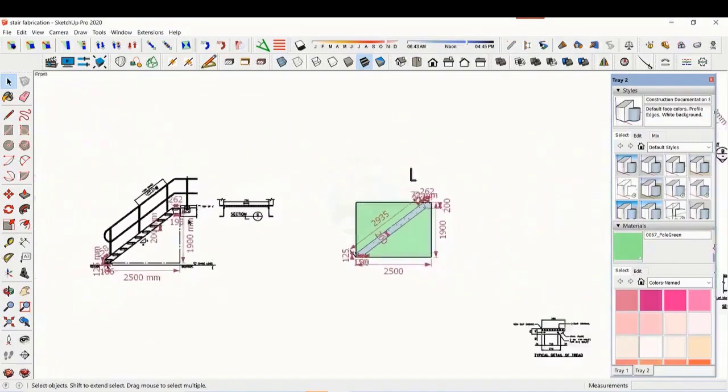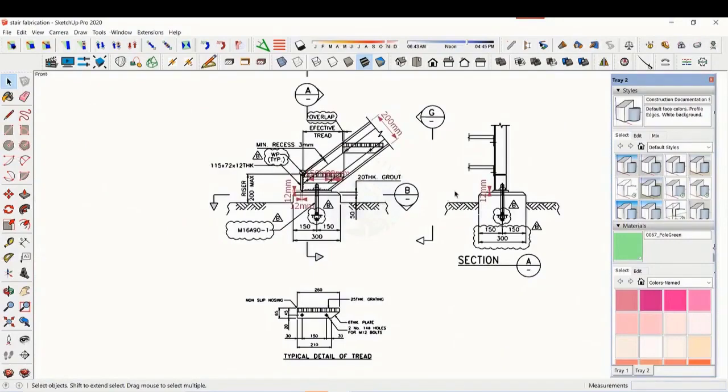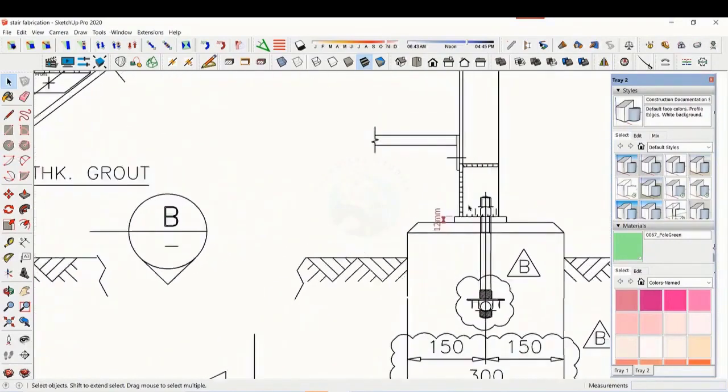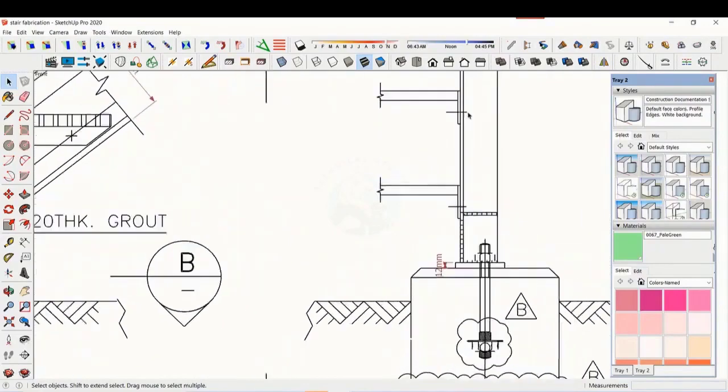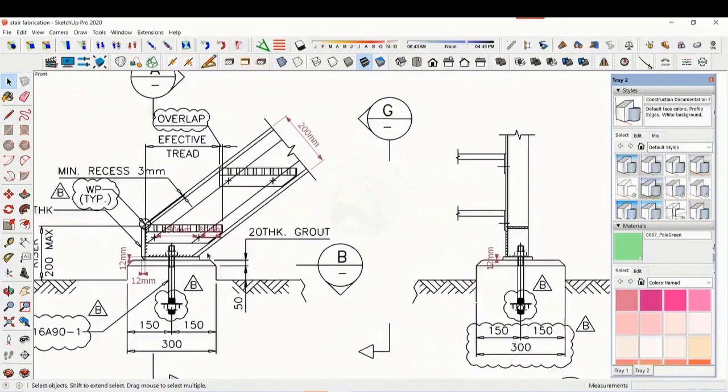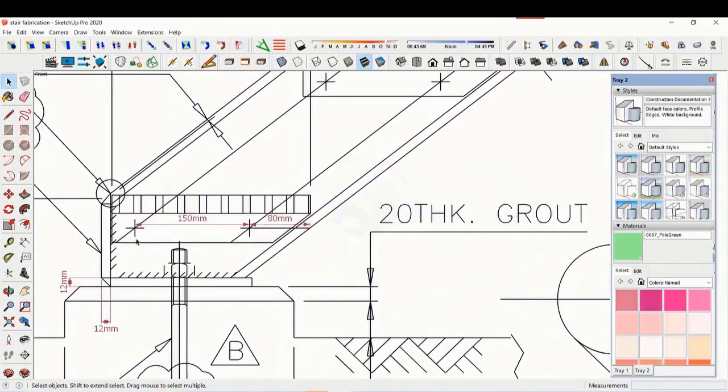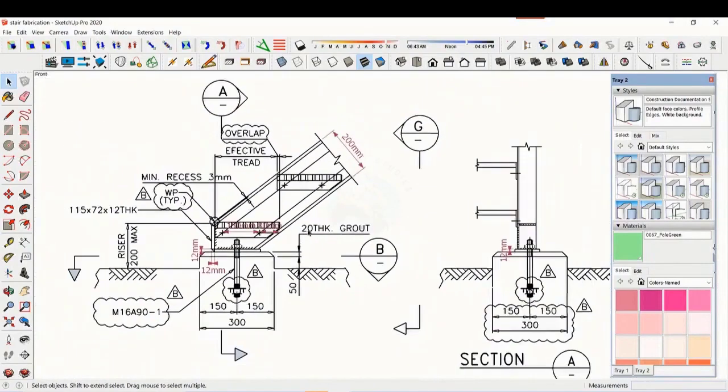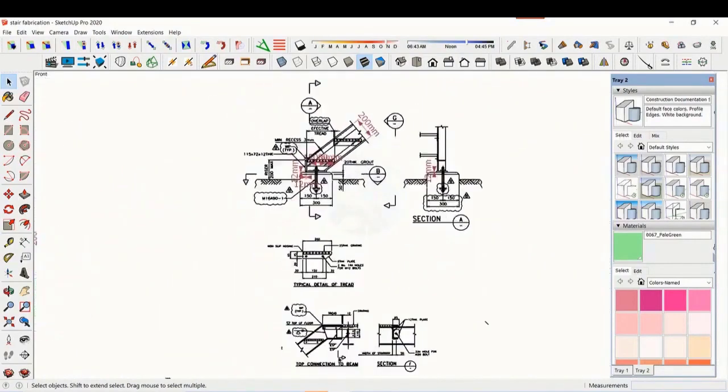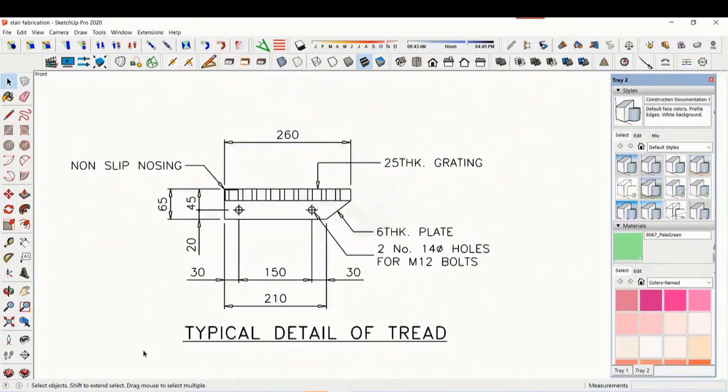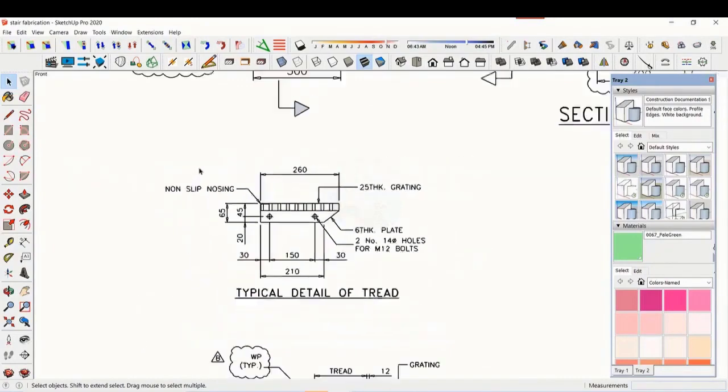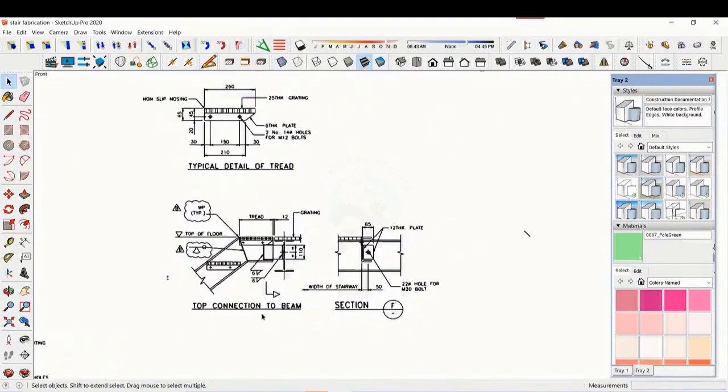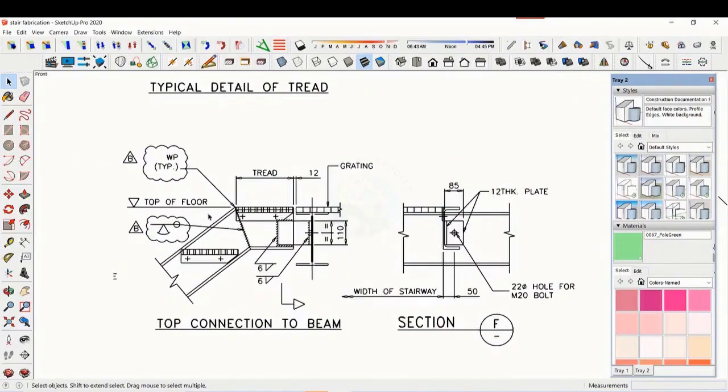Let us see some other details. This is the base plate and base end plate. See the details of the thread. The distance and pitch of the holes are very important. See the details of the top end. Study how the stair and the platform beam are connected.